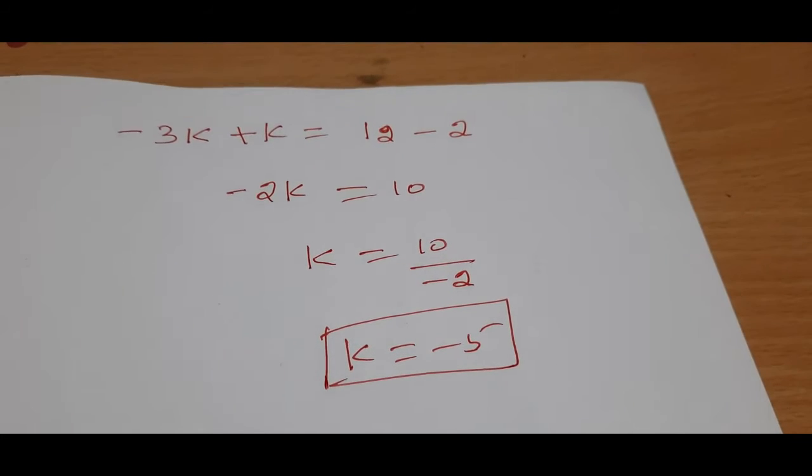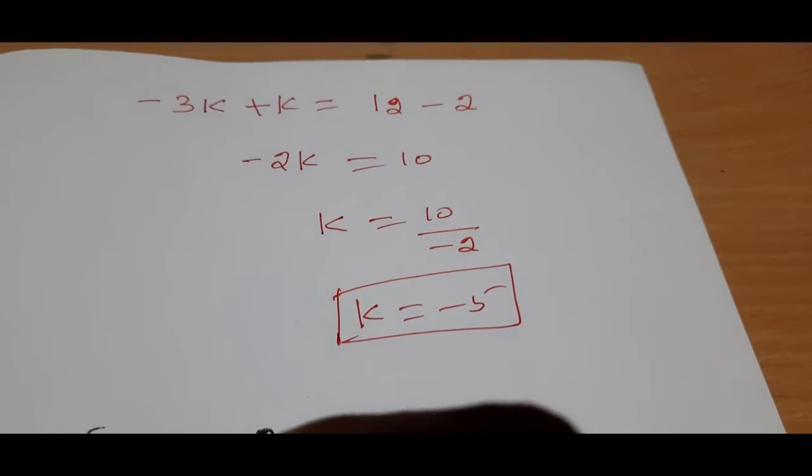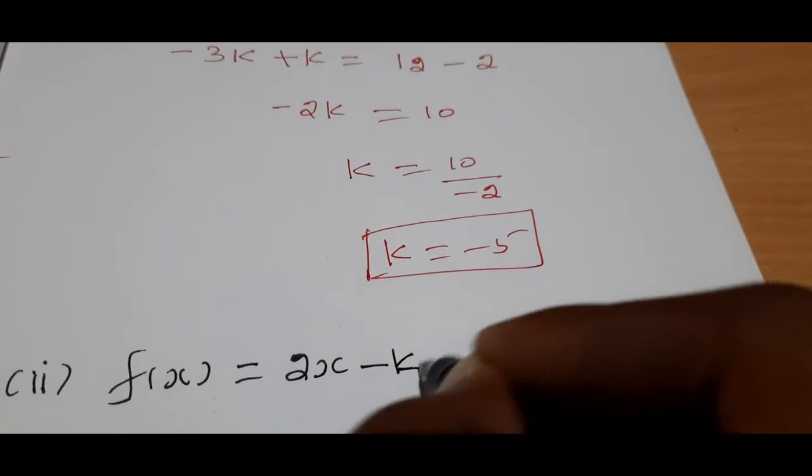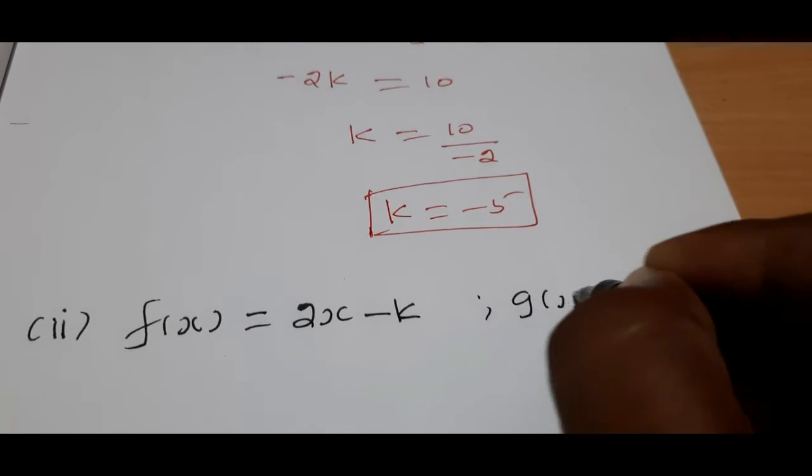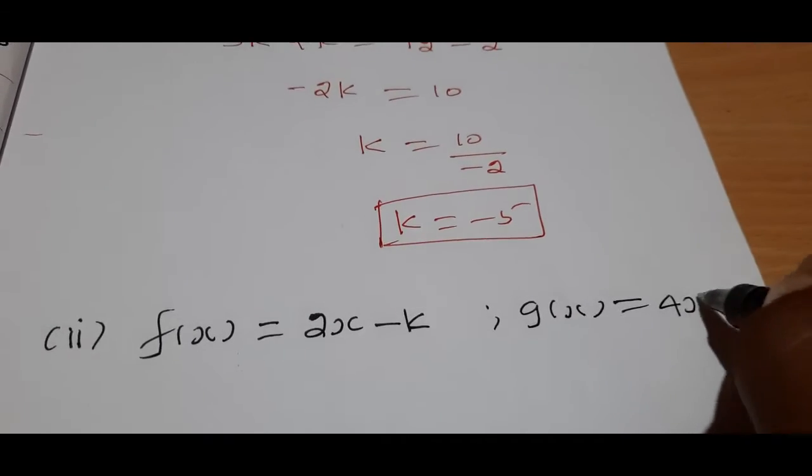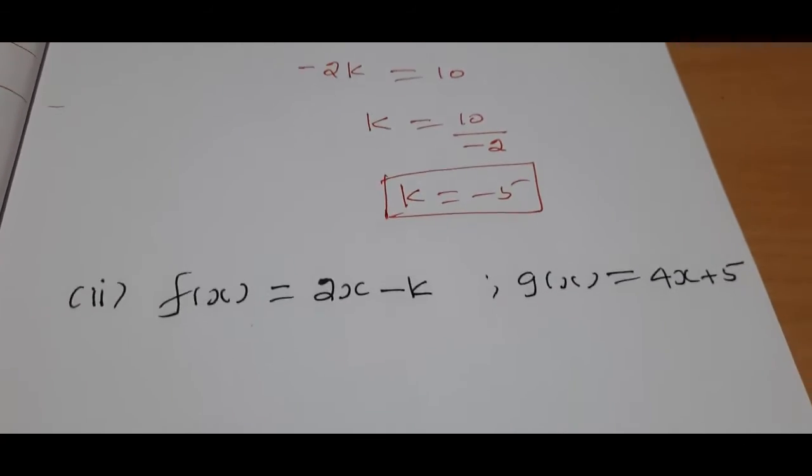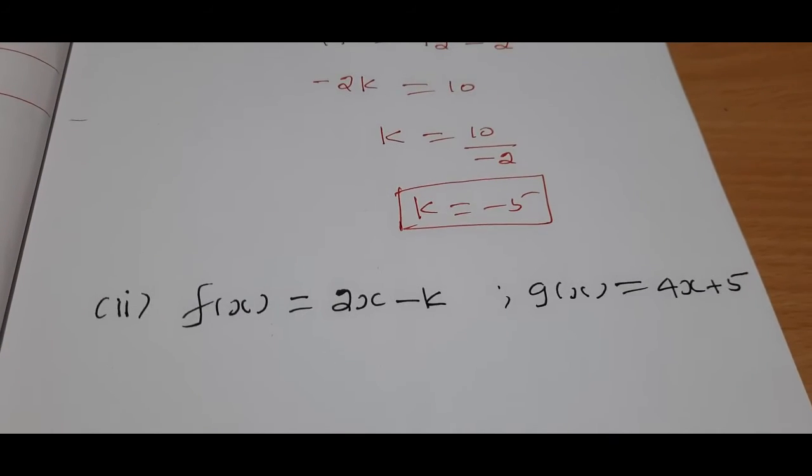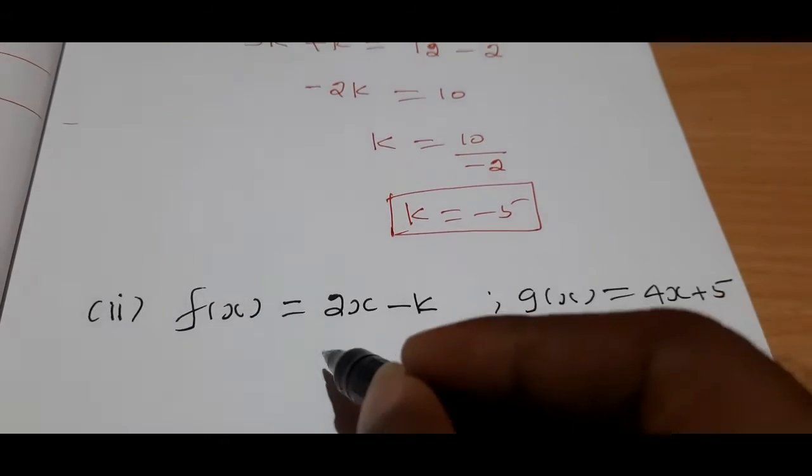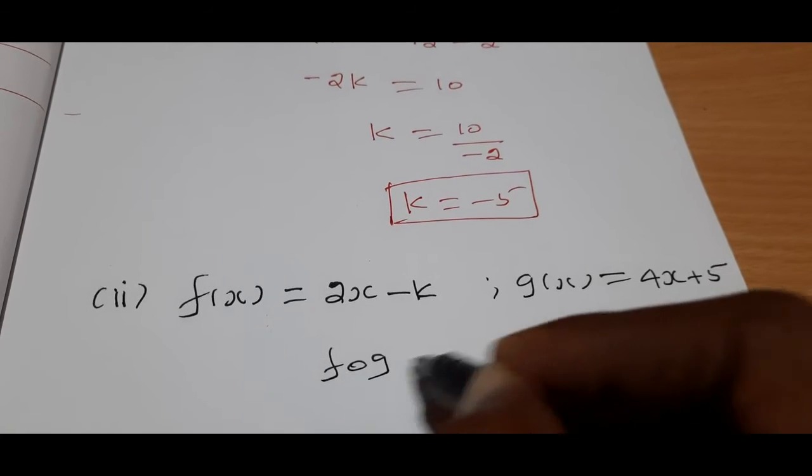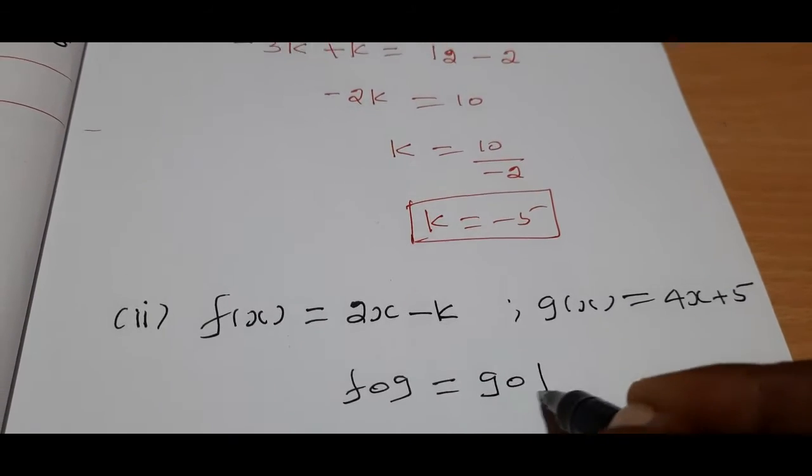For subdivision 2, we have f of x equals 3x minus k and g of x equals 4x plus 5. We need to find f dot g equals g dot f.